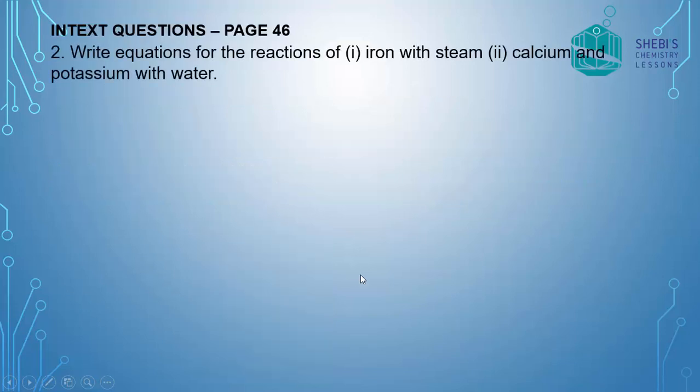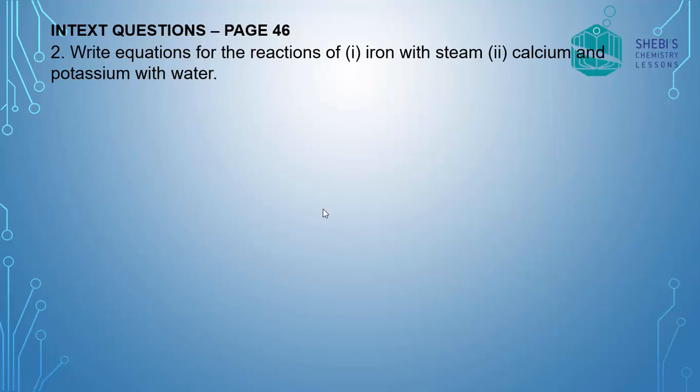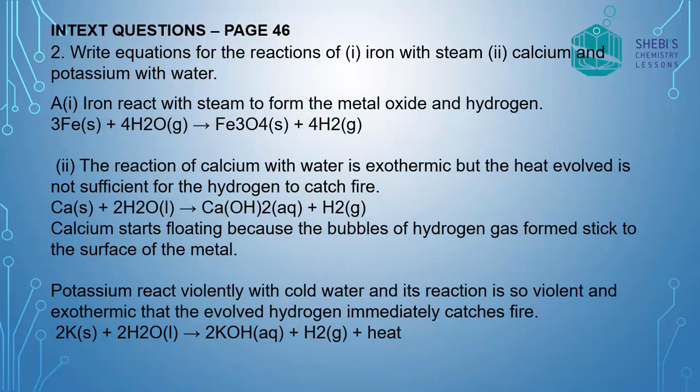Moving to the second equation. Write the equations for the reaction of iron with steam, calcium and potassium with water. We know that iron reacts only with steam to form the metal oxide and hydrogen. We learned that ferric oxide Fe3O4 and hydrogen gas are formed when iron reacts with steam. Iron does not react with normal water or even with hot water.